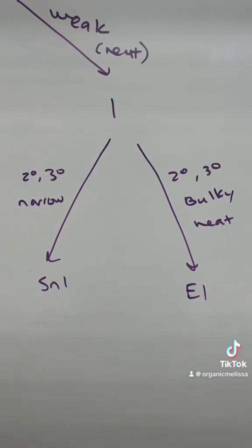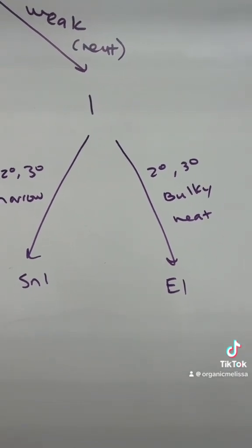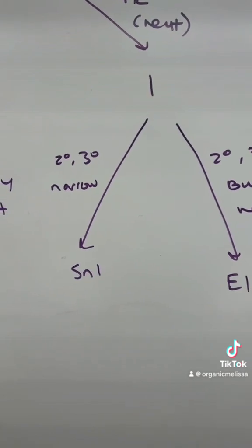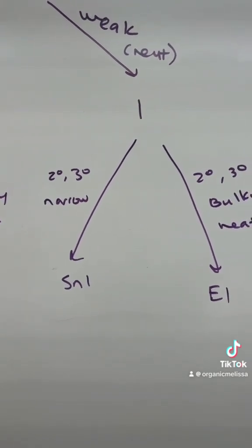Mostly, you just have to look at the narrowness of the nucleophile or if it's bulky with heat. If it's bulky with heat, it favors E1. If it's narrow, it favors SN1, but usually you're going to get a mixture because these two are so closely related.